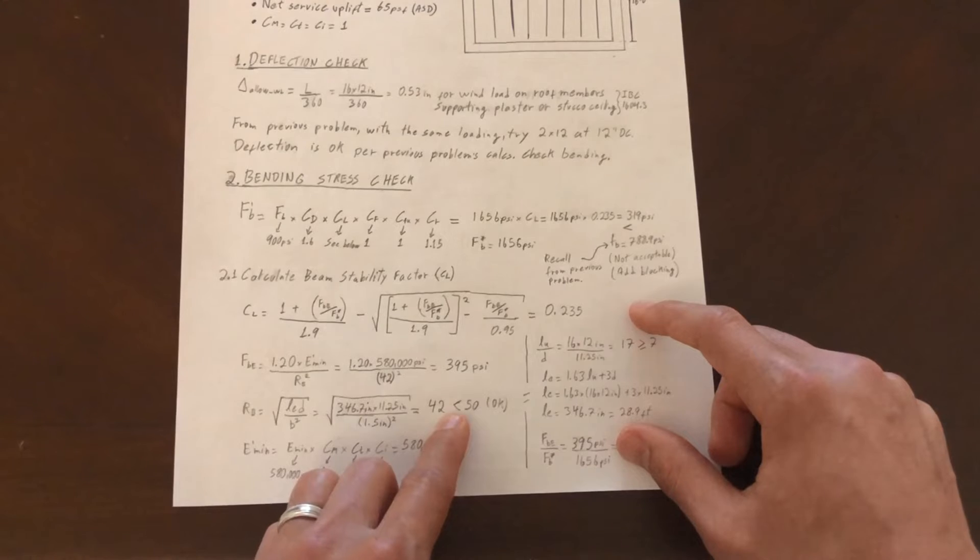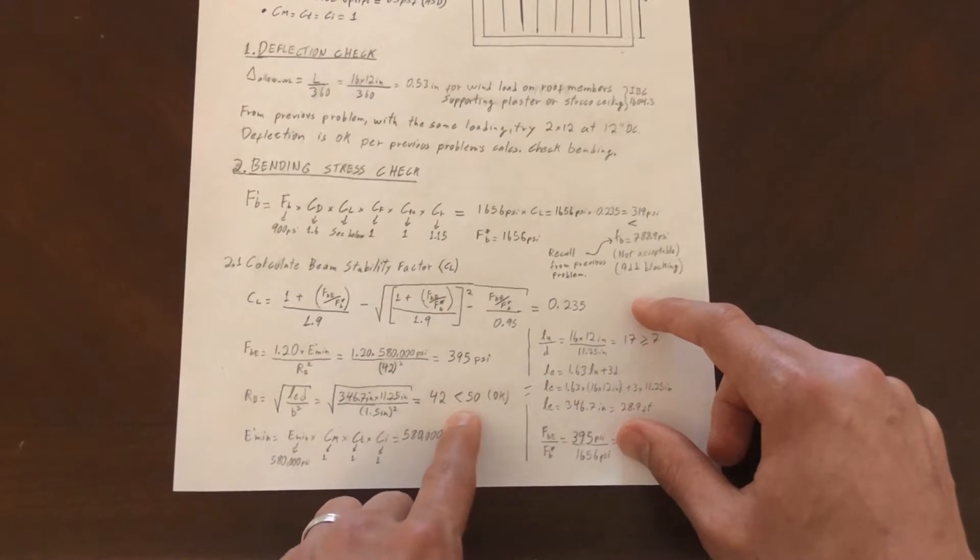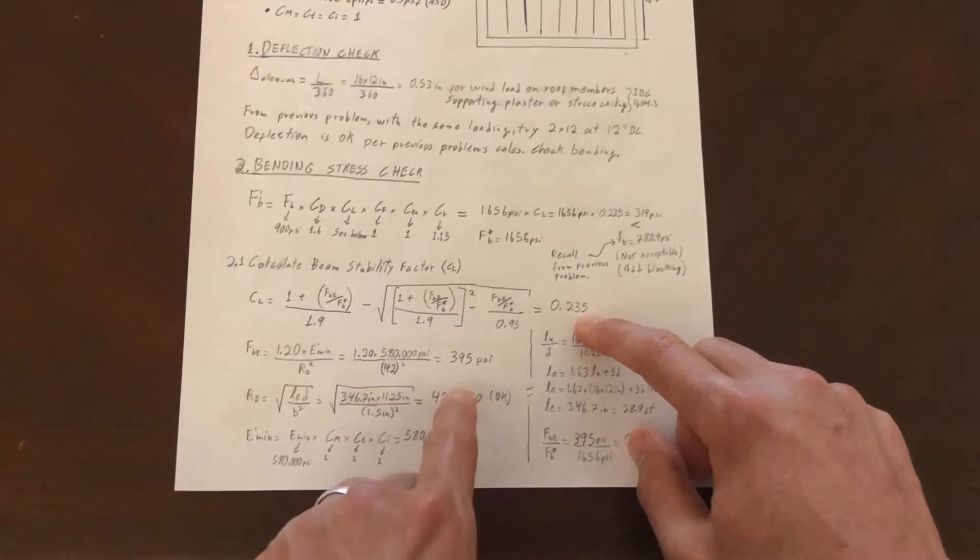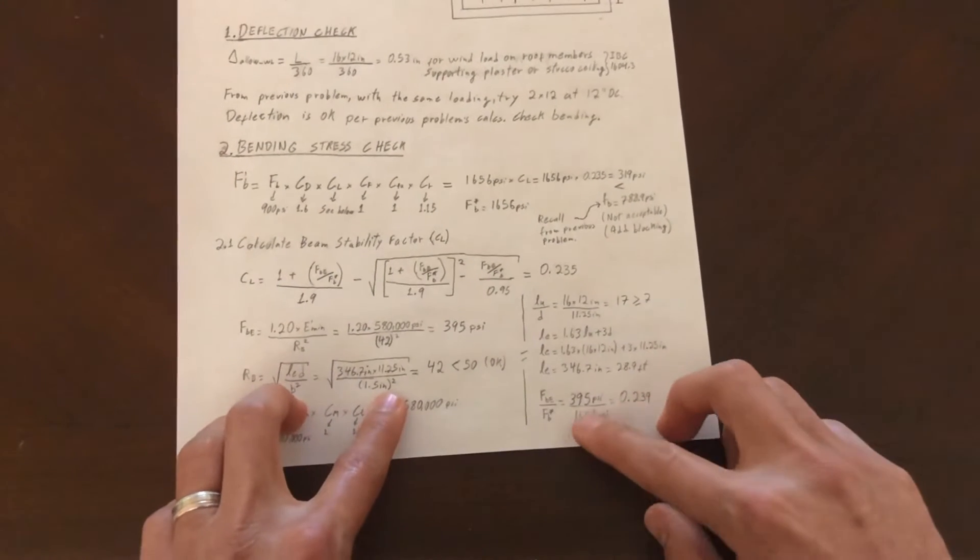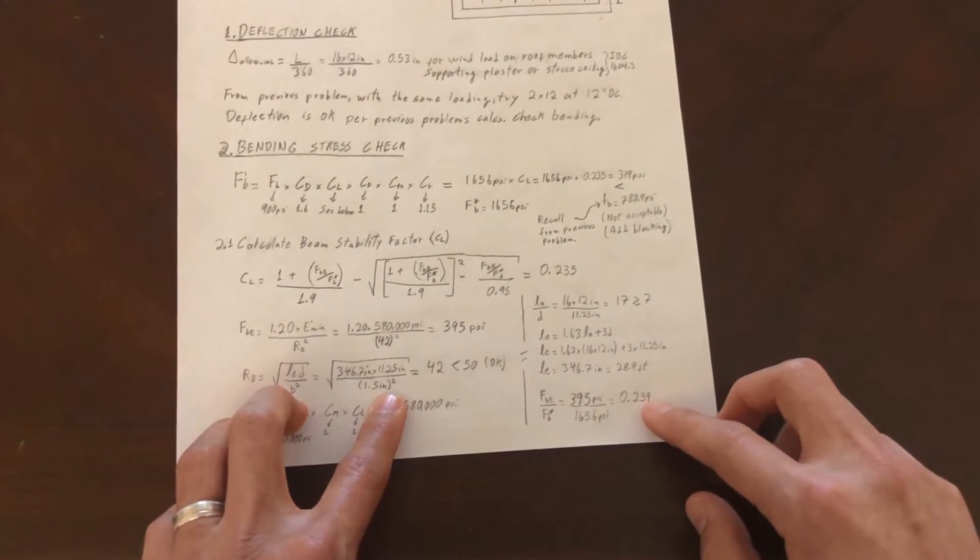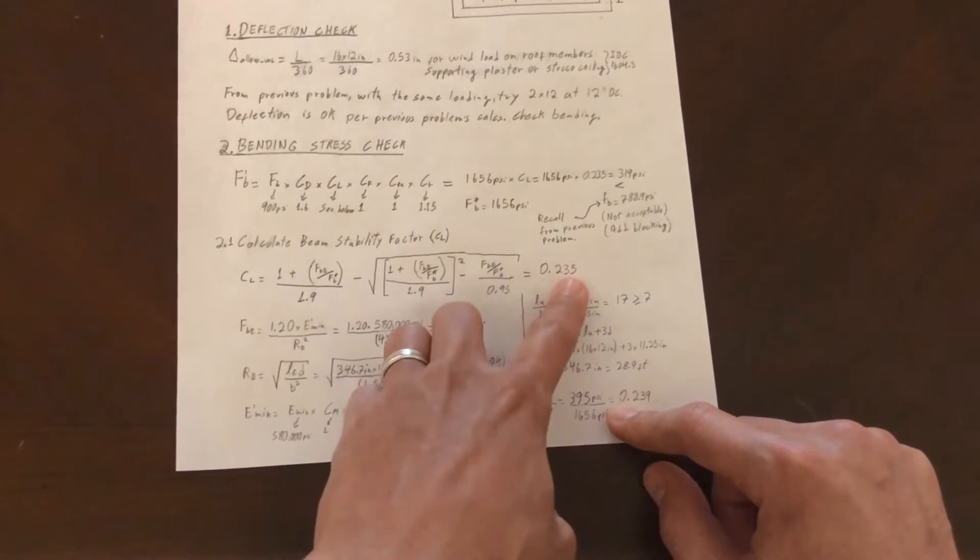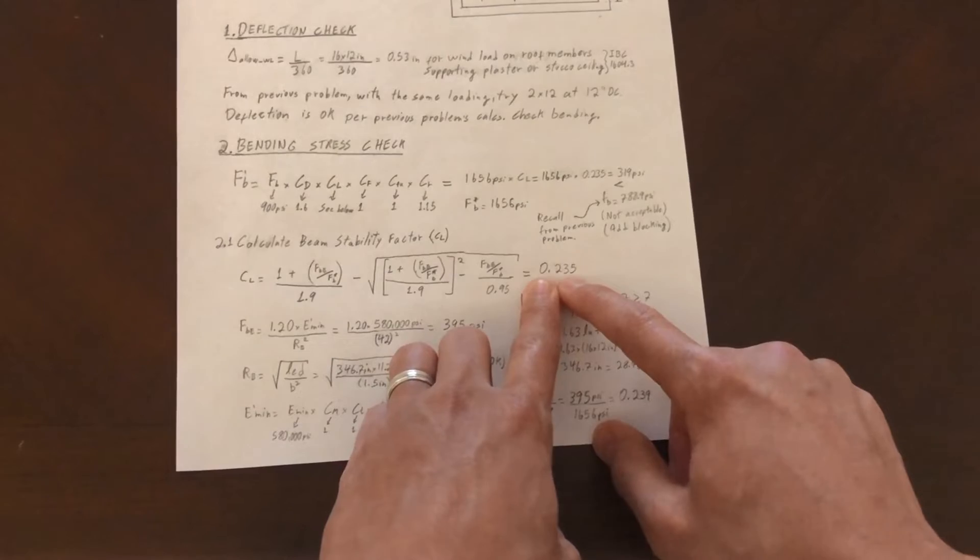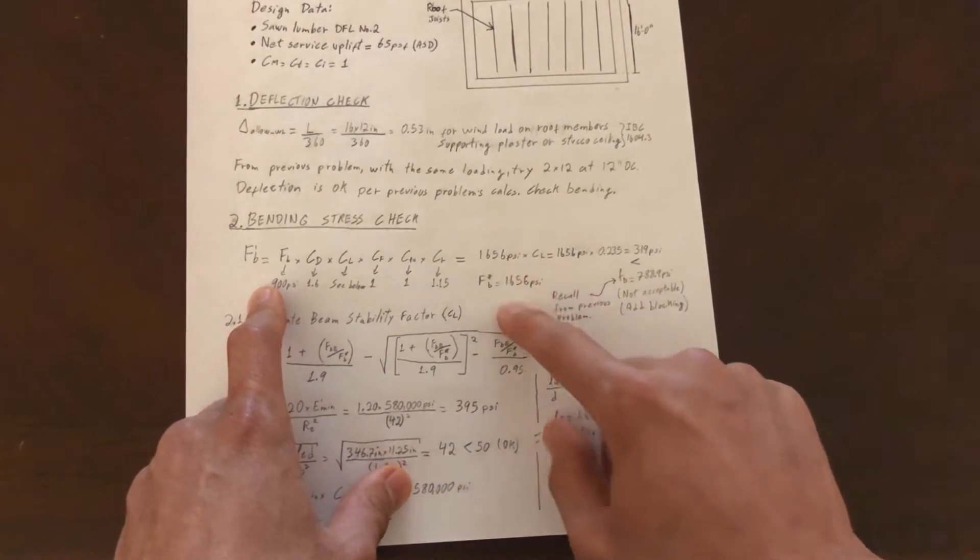We calculate the slenderness ratio here, plugging L sub E into this equation, and then we get 42. You see that we're actually pretty close to the code prescribed limit. This already gives us a hint that we're going to get a pretty low C sub L. As we're going to see later, it's going to be 0.235 because our member is very slender. Then we calculate this ratio here, 0.239, and after you get this ratio you can just plug this ratio into this equation and then you get your C sub L.